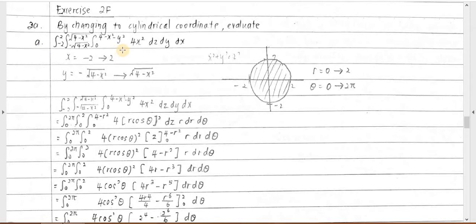Look at the intervals. For the x interval, it is from negative 2 to 2. For the y interval, it is from negative square root of 4 minus x squared to square root of 4 minus x squared. For z, we will just keep it, because in cylindrical coordinates we also have dz. So we will look mainly at x and y.